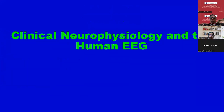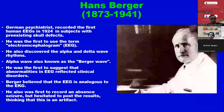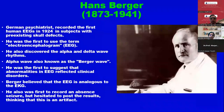Now clinical neurophysiology and human EEG. We are coming from the animal lab and experimental lab to the human neurophysiology lab. Here comes Hans Berger — a German psychiatrist, not a neurologist — who recorded the first human EEG in 1924.